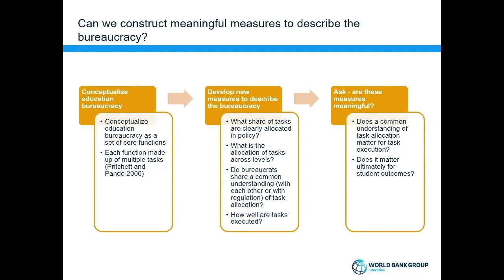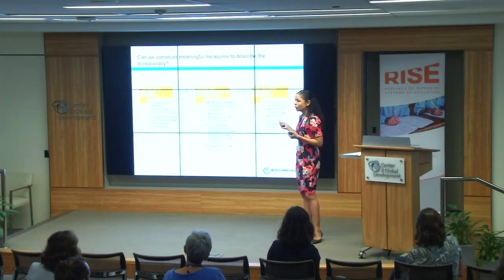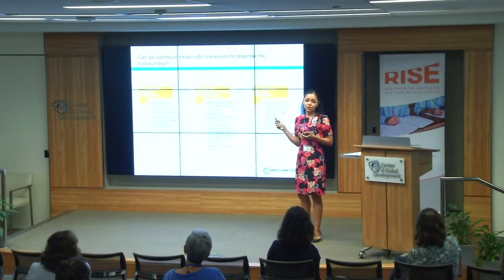We use that conceptualization to develop new measures that answer a series of questions. We ask whether tasks are clearly articulated and allocated in regulation — in legislation, which we call de jure. We ask at which level of the education system the allocation sits. We don't have a normative stance on this but think it could be informative. We also ask whether bureaucrats share a common understanding of that task allocation — with each other and whether their understanding matches the de jure allocation. Finally, we construct measures of how well tasks are actually executed.